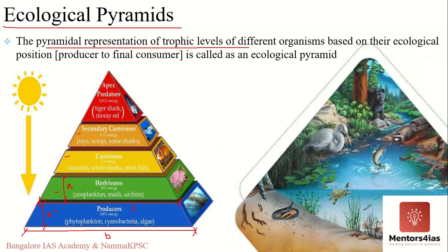Primary producers are always larger in number, so the lowest level of the ecological pyramid always starts with the producers. Since primary producers produce their own food, the pyramid starts there and moves on to primary consumers, then secondary and tertiary consumers. Humans usually occupy the tertiary or secondary level and will always be near the topmost level in any ecological pyramid.